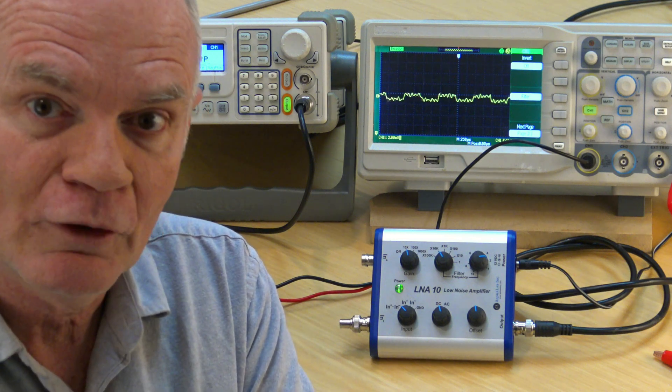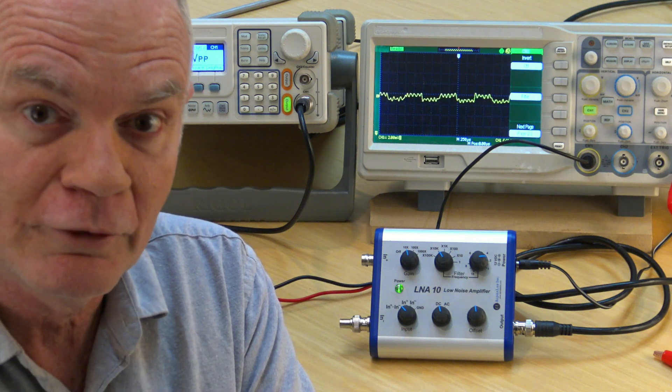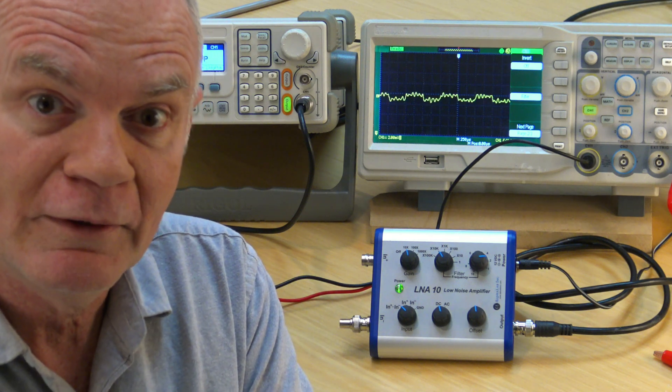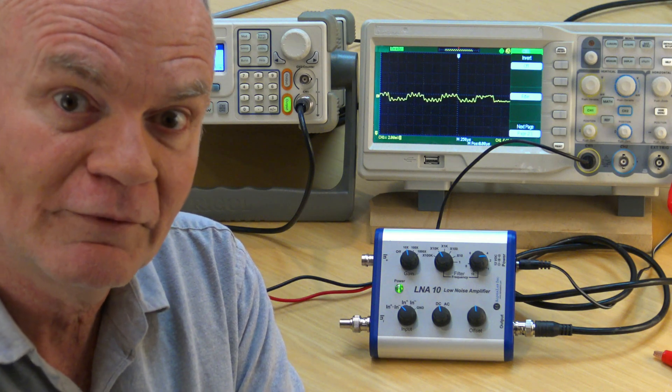On the other hand, low noise differential probes are very expensive, typically five thousand dollars for the ones configured for low frequency work. Alpha Lab is now making a very low noise differential amplifier and probe that's less than a tenth of that price.